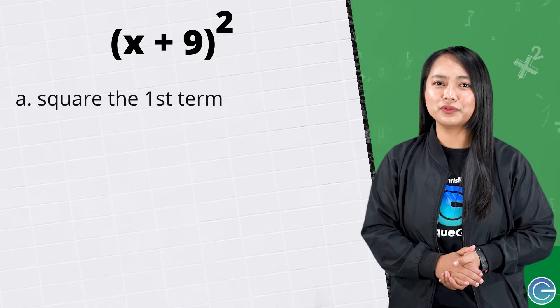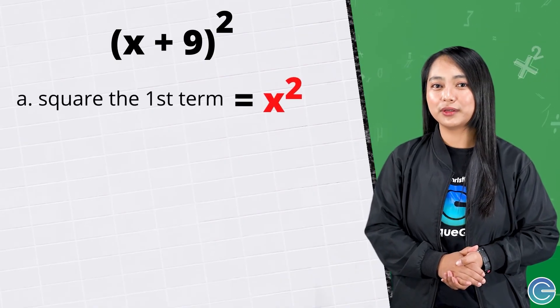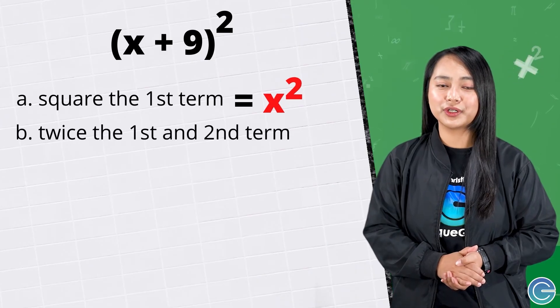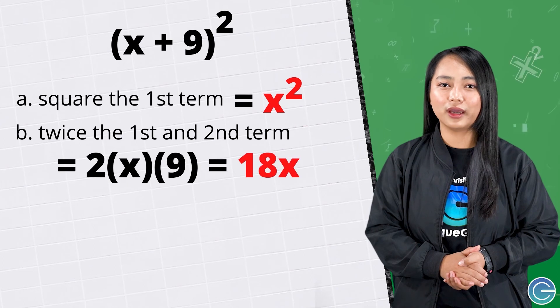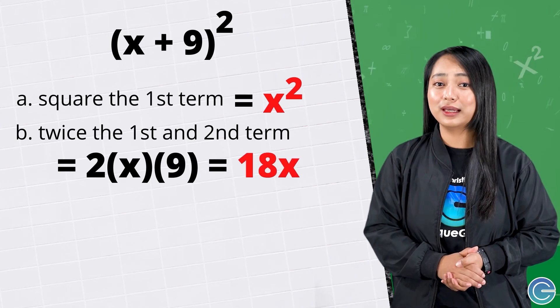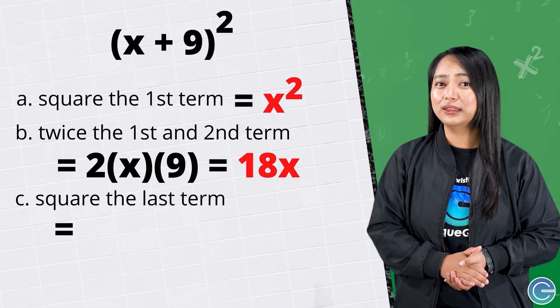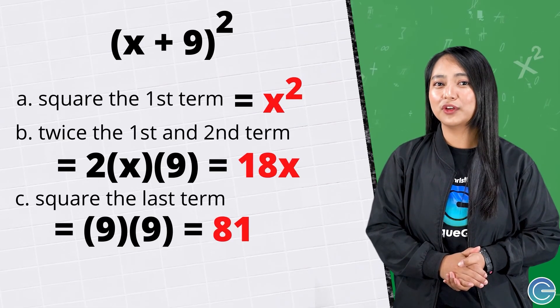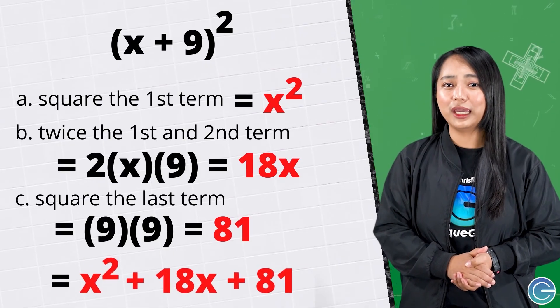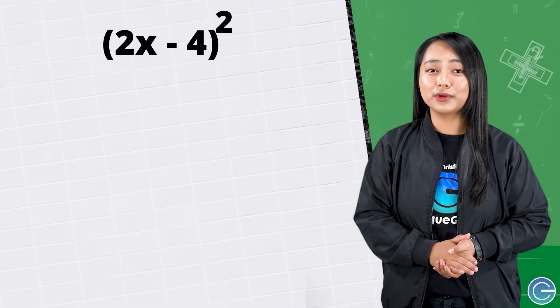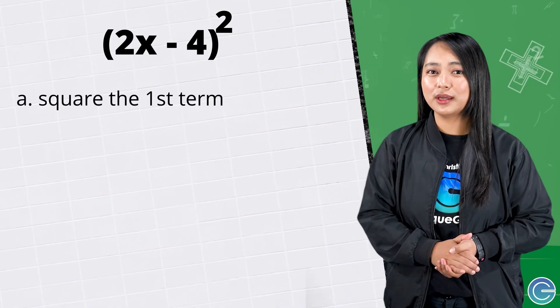If you can remember this formula you will be able to evaluate polynomial squares without having to use the FOIL method — it will take practice. Let's take a look at some examples. For the square of x plus 9: first, square the first term — x squared; next, two times the first term and the second term — 2 times x times 9 gives us 18x; lastly, square the last term — 9 times 9 is 81. Therefore the square of x plus 9 is equal to x squared plus 18x plus 81.